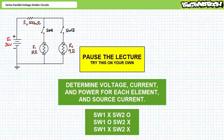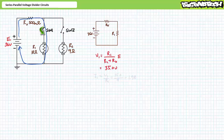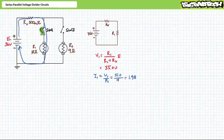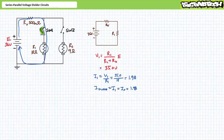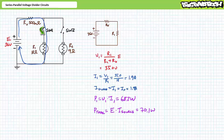If you're tracking, you should have obtained the following values. With only switch one closed, Rx and R1 are perfectly in series. The voltage divider rule demonstrates V1 is 35 volts. Ohm's law demonstrates I1 is 1.9 amps, and source current equals I1 equals Ix equals 1.9 amps. P1 equals V1 times I1, demonstrating P1 is 68.2 watts. Total power equals supply voltage times source current, yielding 70.1 watts. This means Px is the remaining 1.9 watts, which might be considered a loss to this system.